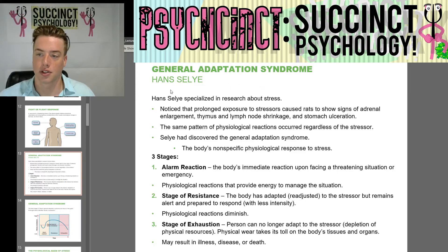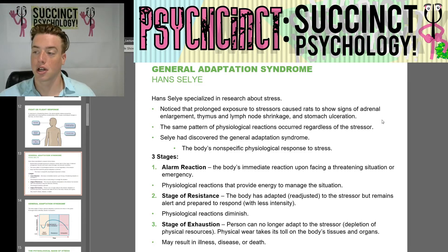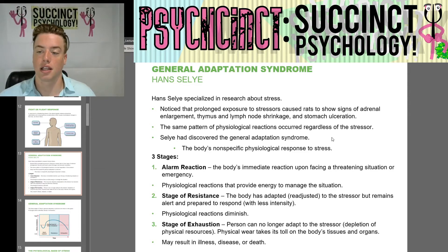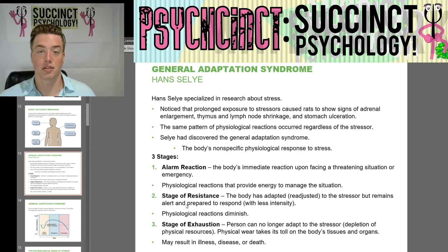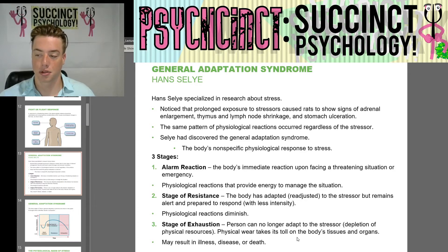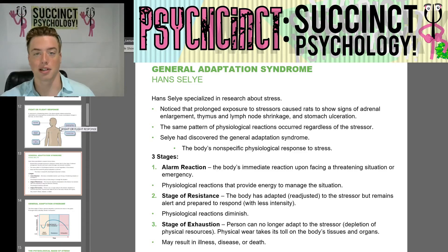Hans Selye specialized in research about stress. He noticed that prolonged exposure to stressors caused rats to show signs of adrenal enlargement, thymus and lymph node shrinkage, and stomach ulceration — the same pattern regardless of the stressor. Selye had discovered the general adaptation syndrome, the body's non-specific physiological response to stress. There are three stages: alarm reaction — the body's immediate reaction upon facing a threatening situation, with physiological reactions that provide energy to manage it; stage of resistance — the body has adapted to the stressor but remains alert, and physiological reactions diminish; and stage of exhaustion — the person can no longer adapt, with depletion of physical resources and physical wear on the body's tissues and organs, which may result in illness, disease, or death. Prolonged exposure to stress is really not good.